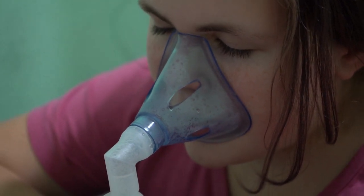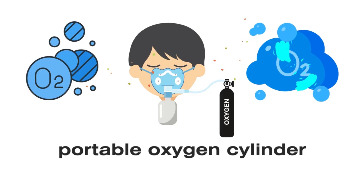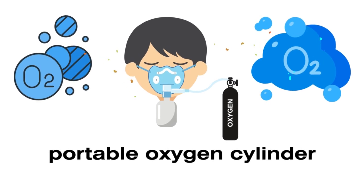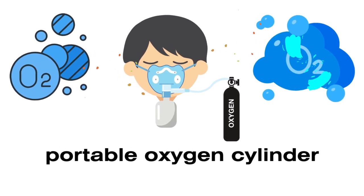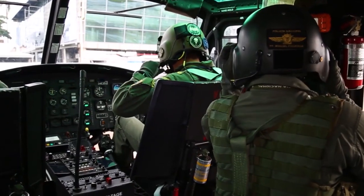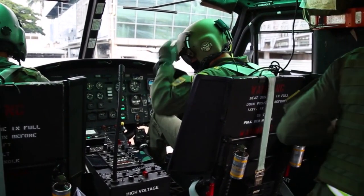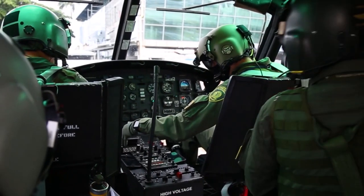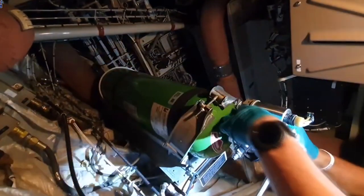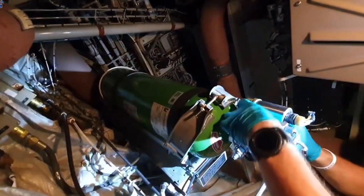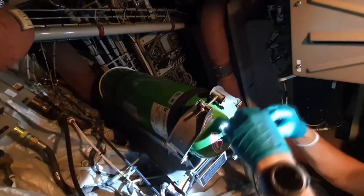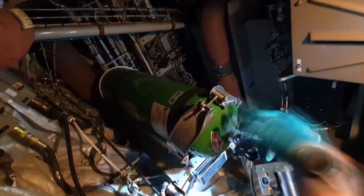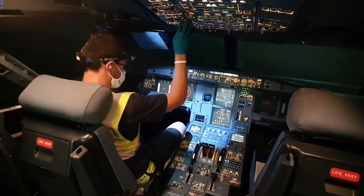Another type of airplane oxygen system is the portable oxygen cylinder. These cylinders contain a supply of compressed oxygen and are typically used by flight crew members for medical emergencies or in situations where additional oxygen is required. They are easy to carry and provide a supplemental oxygen source when needed.